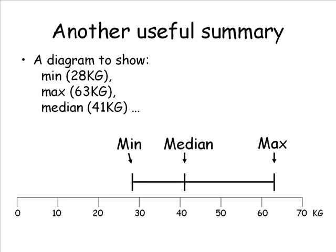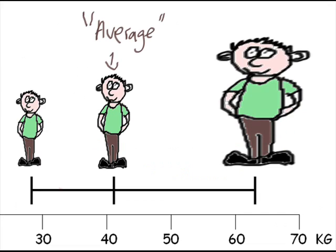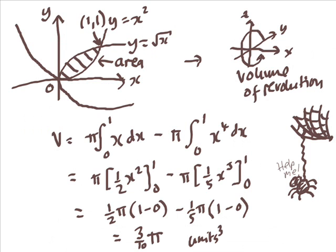For bigger data sets, let's go back to our minimum, maximum, median. We can plot them against the scale and see them. That's quite nice because we can see that the heaviest child is more different from the median than the lightest child. The lightest one is just over 10 kilograms lighter, but the heaviest is over 20 kilograms heavier. It's not a completely symmetrical distribution of weights. Mental image updated: heaviest child is much bigger than average, smallest child is just a bit smaller than average. Maths wouldn't be maths if it was that easy, though.